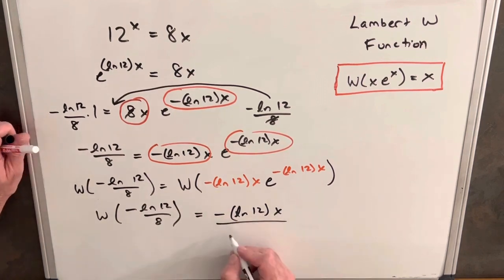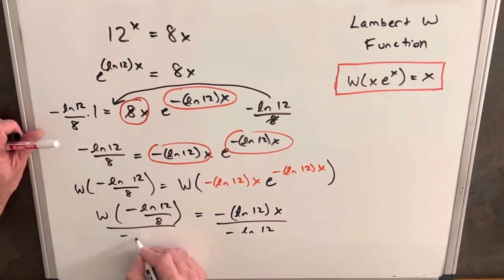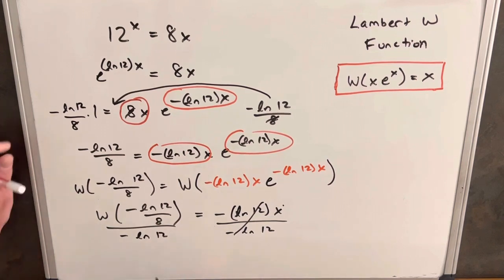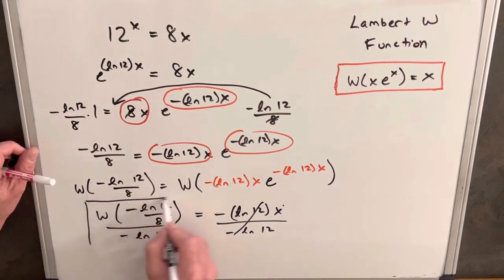Then we can divide by minus ln 12 on both sides. And this will cancel out and we're just left with, we have our, we've isolated our x. And so this is actually going to be our answer right here.